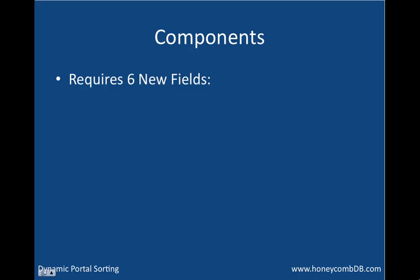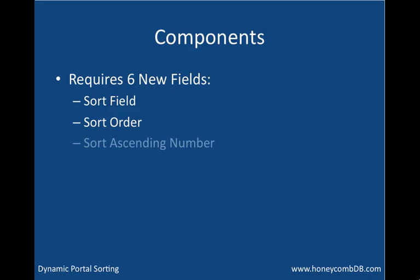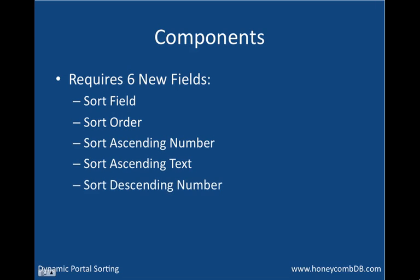In order to achieve dynamic portal sorting, we're going to need six new fields located on the table which our portal is representing. These six new fields are: sort field, sort order, sort ascending number, sort ascending text, sort descending number, and sort descending text.